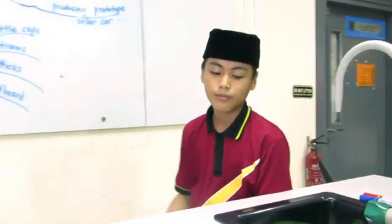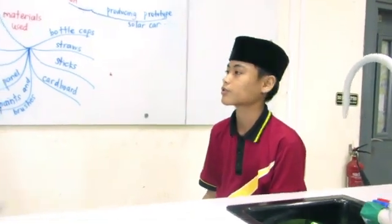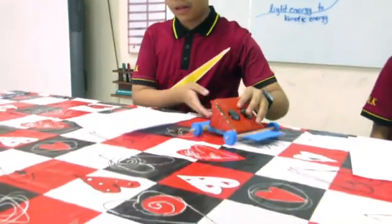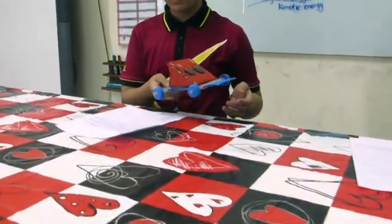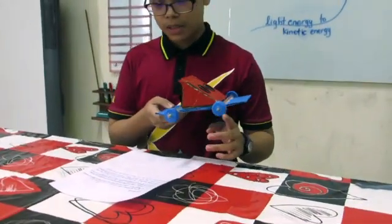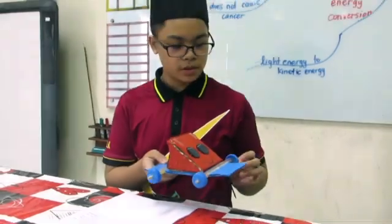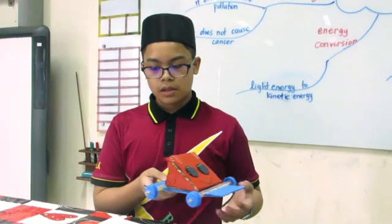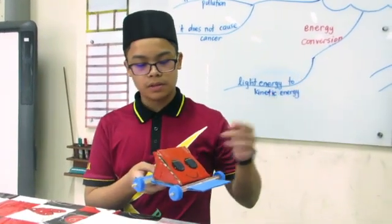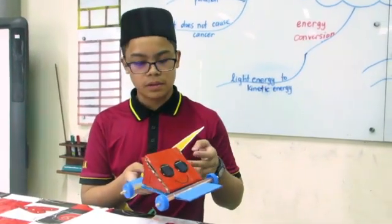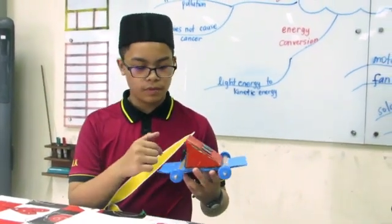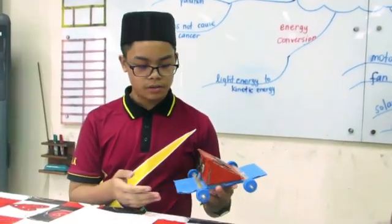My teammate Daniel will proceed to explain how it works. As explained by my teammates, this is the prototype solar car that we have built. As you can see, we use bottle caps for the wheels and straws as axles to have enough space for the wheels to move. The source of light from the sun activates the solar panels, which converts the light energy into kinetic energy causing the fan to move, hence causing the car to move.